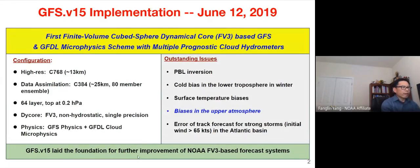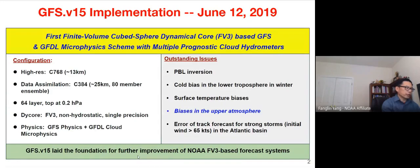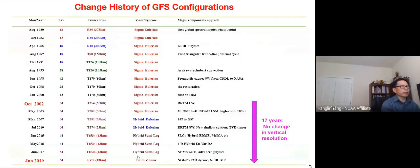One major goal is to improve the upper atmosphere parameters. This model will become part of the Earth system modeling component, needed to improve forecasts for sub-seasonal and seasonal scales. Some of the major forecast signals come from the upper atmosphere, including the stratosphere-troposphere interaction.